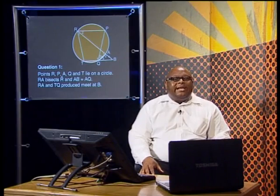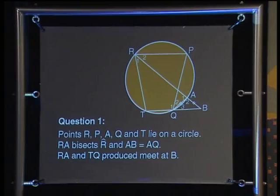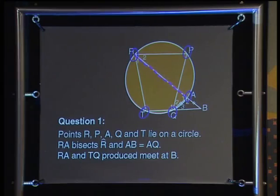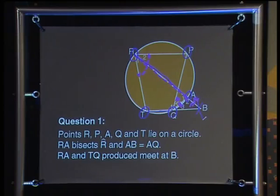In the diagram, points R, P, A, Q, and T lie on a circle. RA bisects angle R, and AB equals AQ. RA and TQ produced meet at B. 'Produced' just means the lines are extended to meet at B.